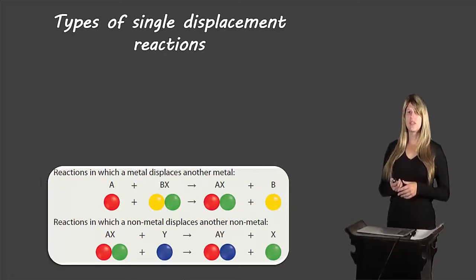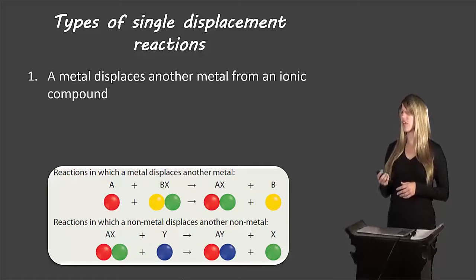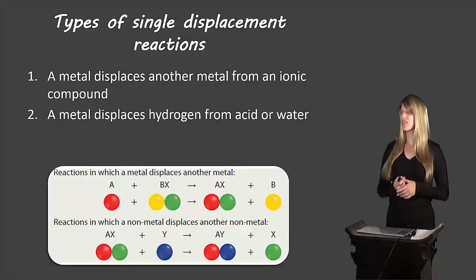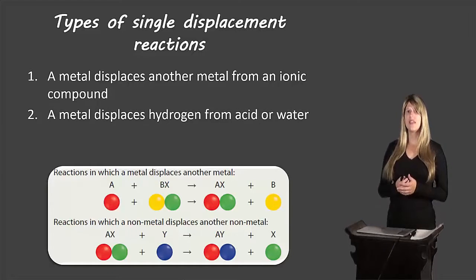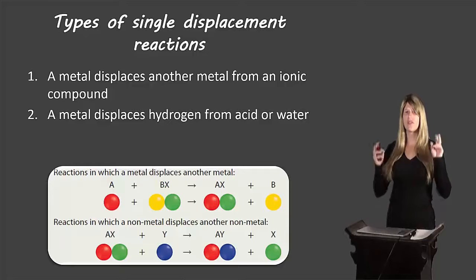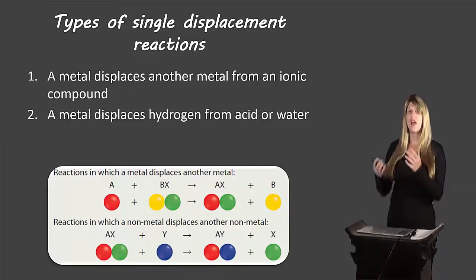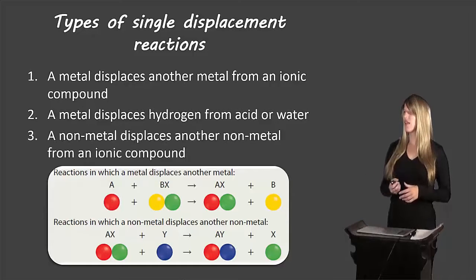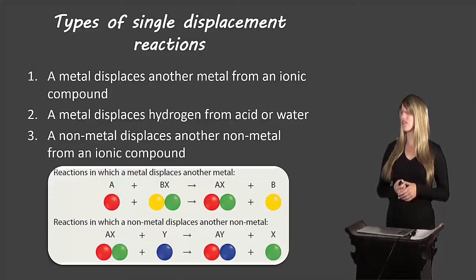The types of single displacement reactions we'll look at: the first is when a metal displaces another metal in an ionic compound. The next is when a metal displaces hydrogen from acid or water — in this case we're treating hydrogen sort of like a metal. A metal can displace hydrogen in certain situations. And the third type is when a non-metal displaces another non-metal in an ionic compound.